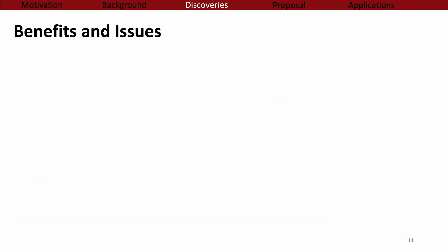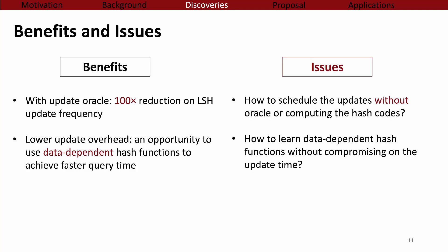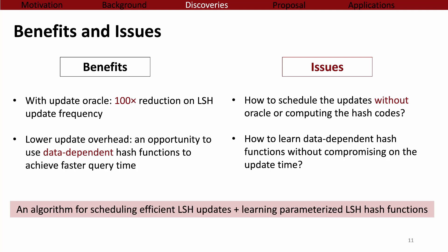We will show the detailed benefits from this observation. First, if we have an oracle that tells us when to update LSH, we would reduce the frequency of LSH updates by 100 times. With such low update frequency, it gives us an opportunity to use data-dependent hash functions, which reduces query overhead. However, in practice we do not have this oracle, and even with low update frequency, it is not obvious we can achieve shorter query time using data-dependent hash functions without compromising update time. Therefore, I will show two key components of Mongoose: an algorithm for scheduling LSH updates, and how to learn parameterized LSH hash functions at low cost.